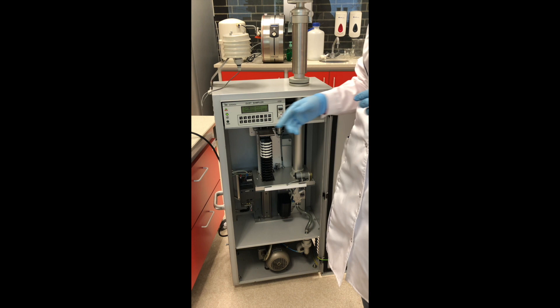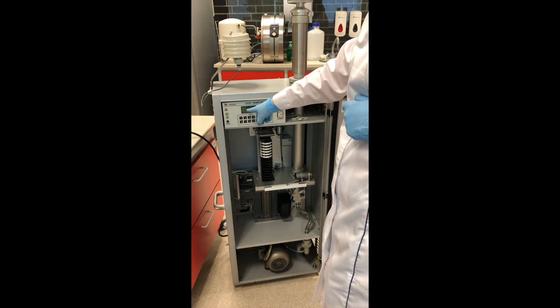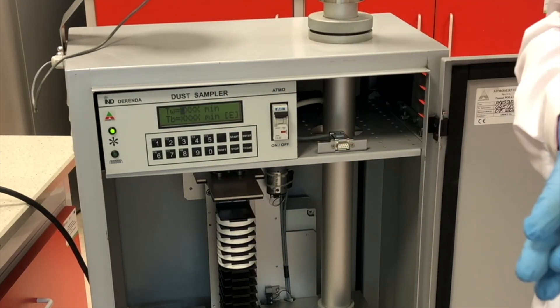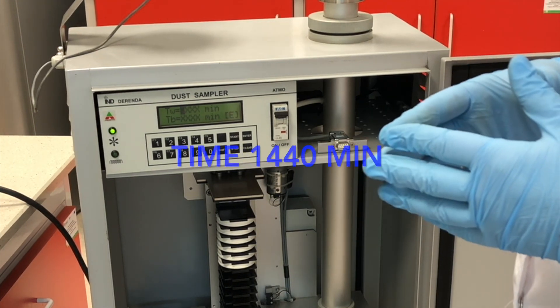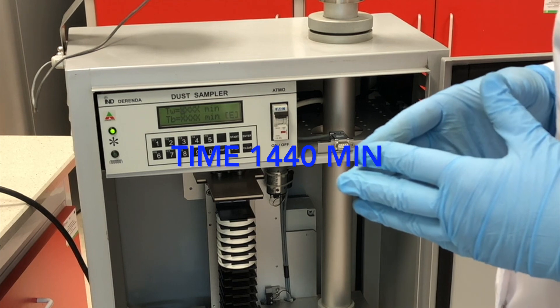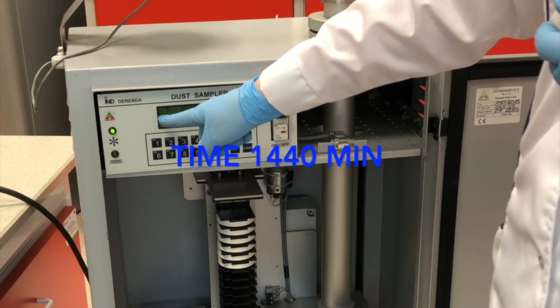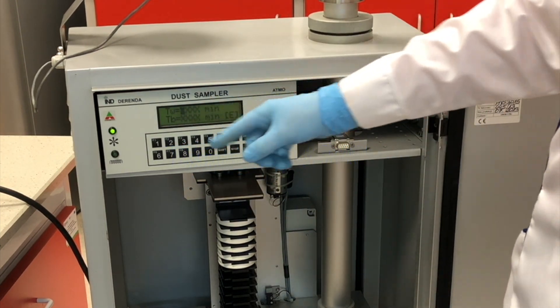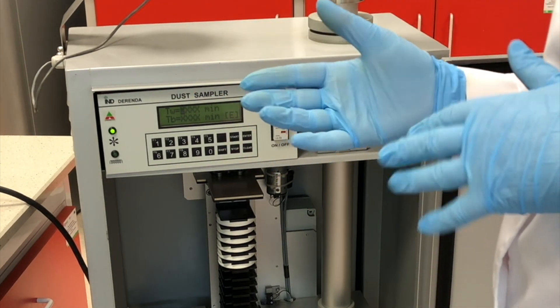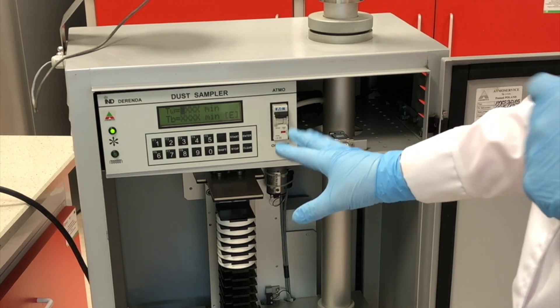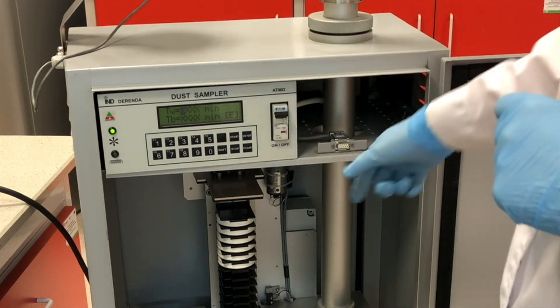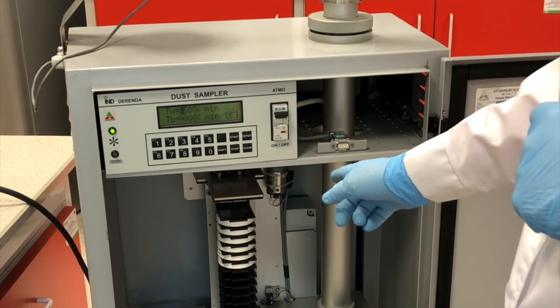Now, we determine the time of work. When we want the 24 hour measurements, we need 1440 minutes. And we also determine the time of break. Because there is at least 1 minute or 2 minute break when the sampler changes the filter.